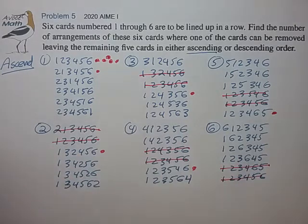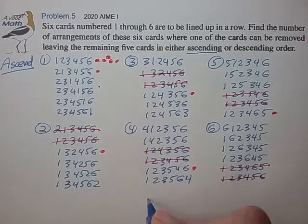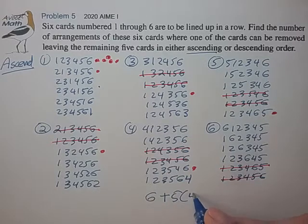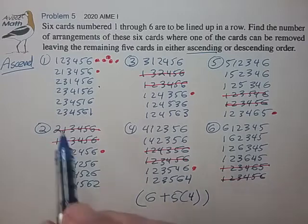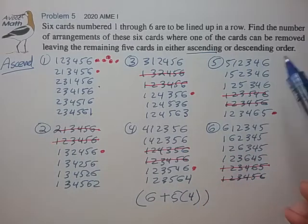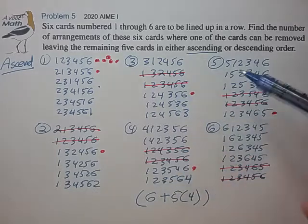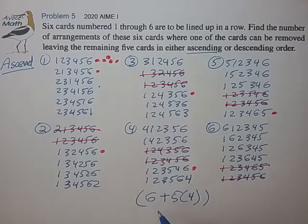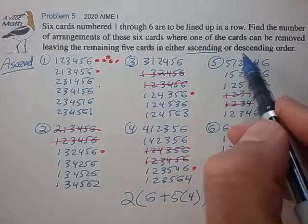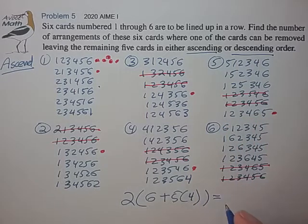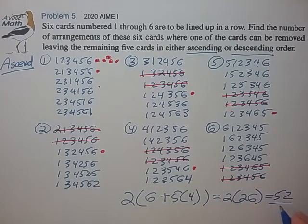For the ascending order, the total number of arrangements is 6 plus 5 times 4, which is 26. If we repeat this process for the descending order, we'll have the exact identical count. So we just double this to get the number of arrangements for both ascending and descending: 2 times 26 equals 52. Final answer.